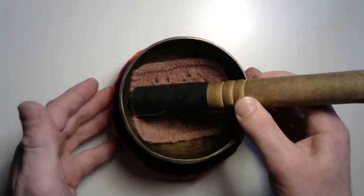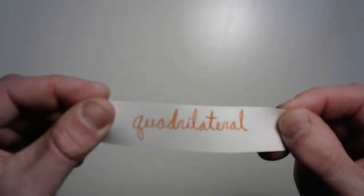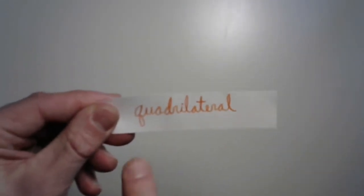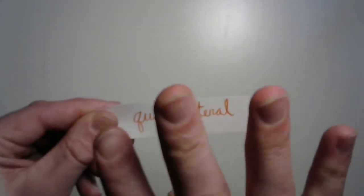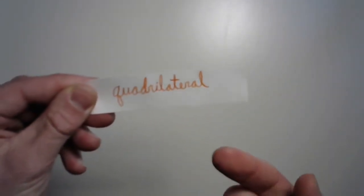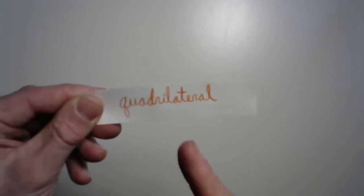Hello friends and welcome to a lesson on the parts of a quadrilateral. Quadrilateral — what does that mean? Well it's two parts: quadra, which means four, and lateral, which comes from the word lateralis — it means sides. These are four-sided shapes and there are quite a few of them, but we'll talk about those later.